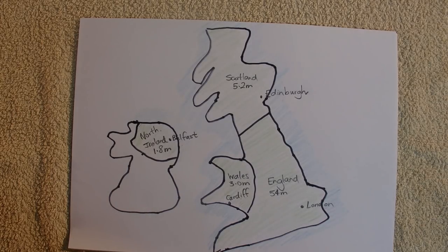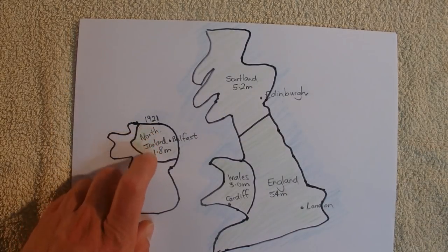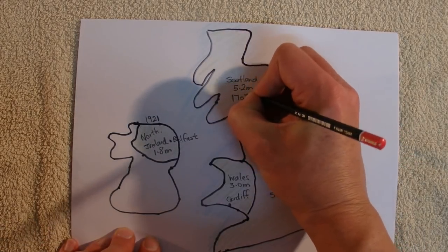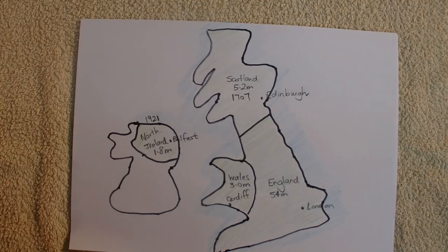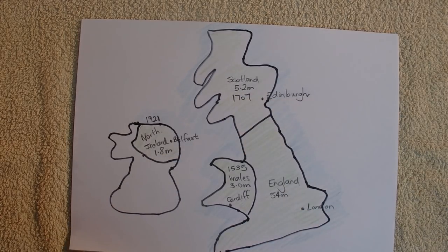Before I created this video, I was doing a little bit of research and trying to work out when the different countries were established. I'm not 100% sure if I've got them correct, but I came up with 1921 or 1922 for Northern Ireland, 1707 for Scotland, and for Wales I came up with 1535. So hopefully they're correct — if not, I'm sure somebody will leave me a comment down in the comment section.